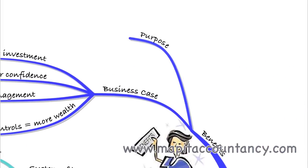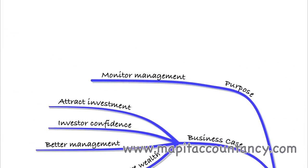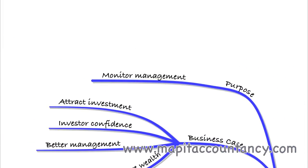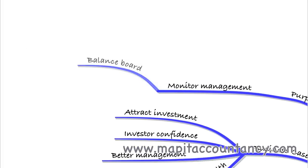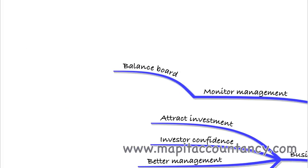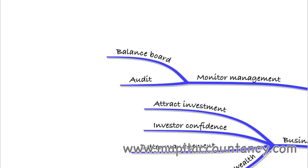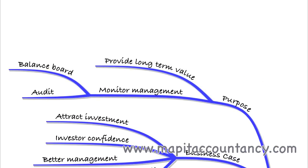The purpose of corporate governance is to monitor management. We need to make sure that management are acting in the interests of shareholders, the owners of the business. We also need to balance the board — we'll be talking about non-executive and executive directors — and we need to monitor audit. Ultimately, governance should ensure that long-term value is provided to the shareholders.